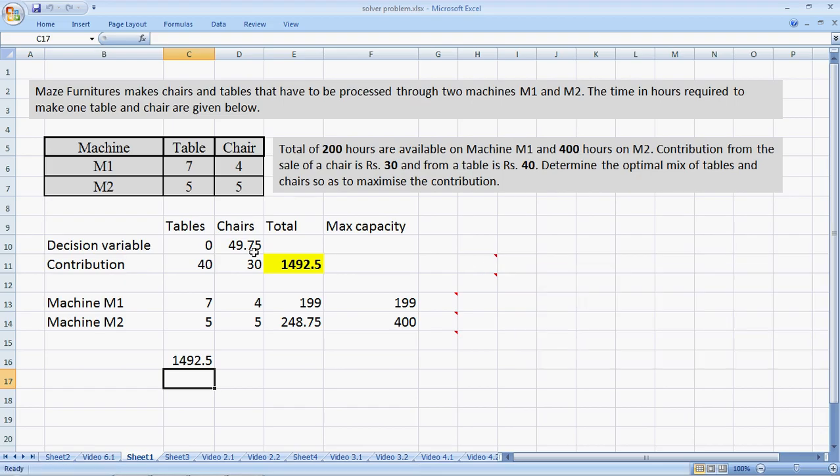Now, one thing we're ignoring here is that I know we cannot make decimal number of chairs. 49.75 chairs is not possible. But we're just looking at the concept of shadow prices here. So I think we can work around with that.